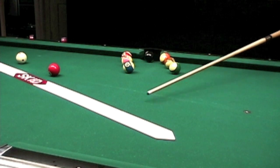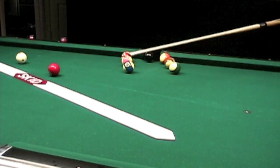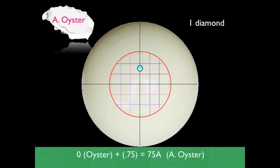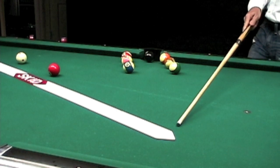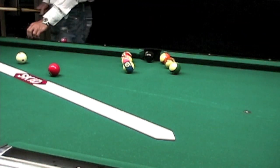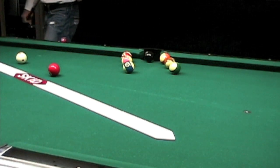So here we have one diamond away of zero, and we have three diamonds going forward. Each one is a quarter, quarter, half, three quarters. Three quarters of a tip above center is our final adjusted oyster equation, which will put us in position for the eight ball.